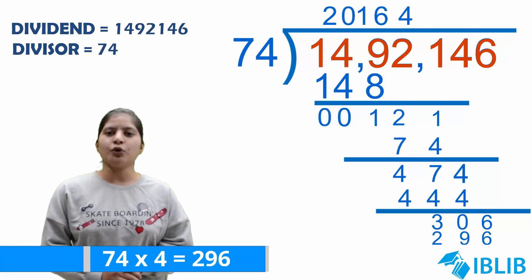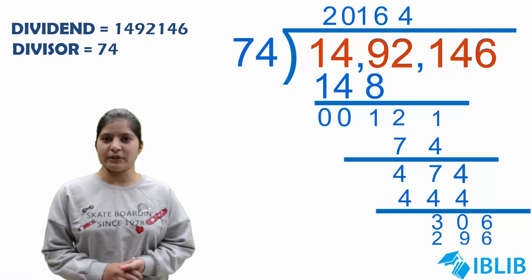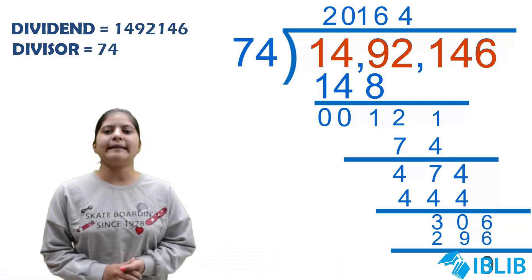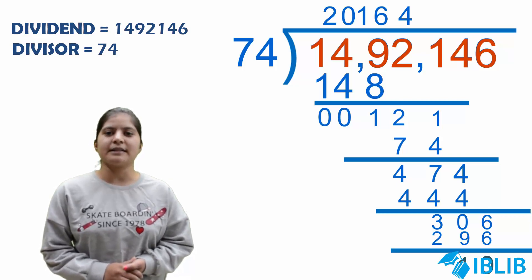Now, we will subtract these numbers. 6 minus 6 will give us 0 and 10 minus 9 will give us 1. Thus, our final remainder is 10.